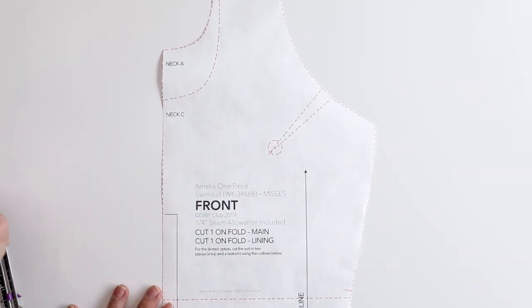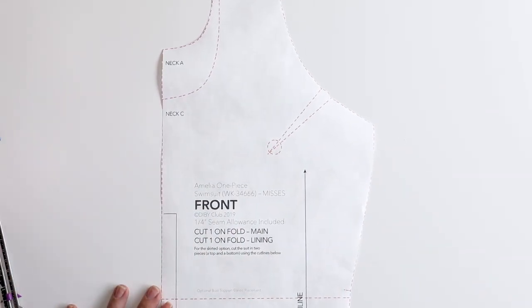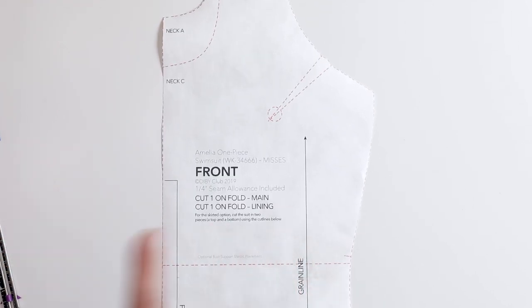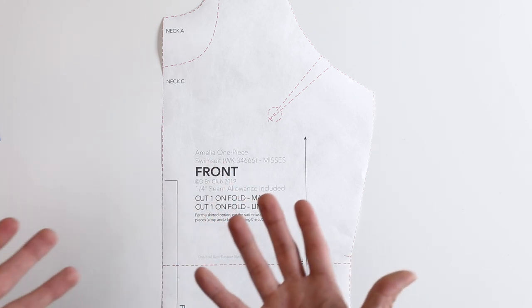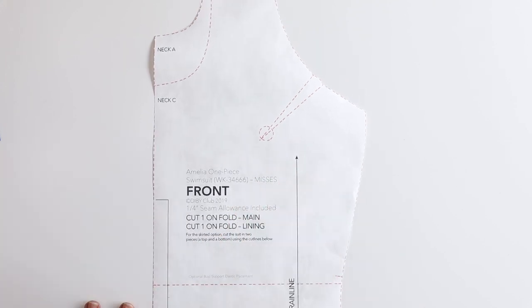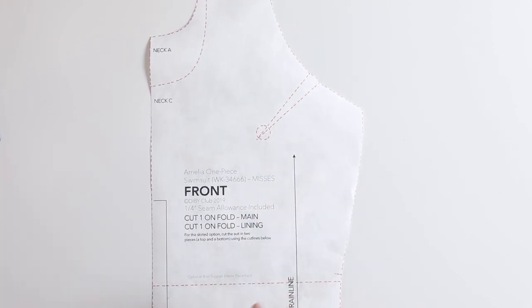Another thing that you will need before we get started is to know how much to adjust the pattern for. We have a tutorial on the Divi Club website. Go to dibby.club, search FBA and you will find our tutorial on how exactly to know how much you'll want to adjust for. So let's go ahead and get started making this adjustment.